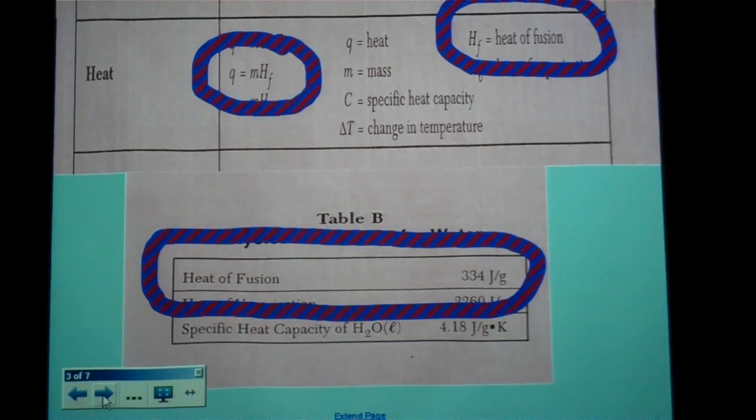If you go on the back table, table T, you'll find the equation Q equals MHF. You'll also see that it is labeled that HF is heat of fusion. Fusion is a fancy way of saying melting. You don't have the value for heat of fusion on table T, so you have to go to table B to find it. And there you go. You find it right there on the bottom here. Heat of fusion is 334 joules per gram. It's a different value than we had before.